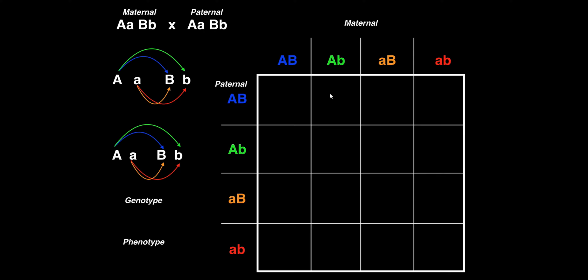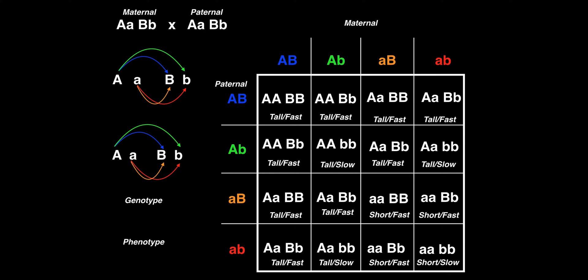Now that I have this set up, I'm going to fill in each of the 16 cells. I'm going to go cell by cell, pairing the A's with A's and the B's with B's. Cell one: big A, big A, big B, big B. Cell two: big A, big A, big B, little b. Cell three: big A from the father with little a from the mother gives a heterozygote big A, little a, and big B, big B. Cell four: big A little a, big B little b. You can pause the video and fill in the remaining genotypes — this is what you do for each cell manually.